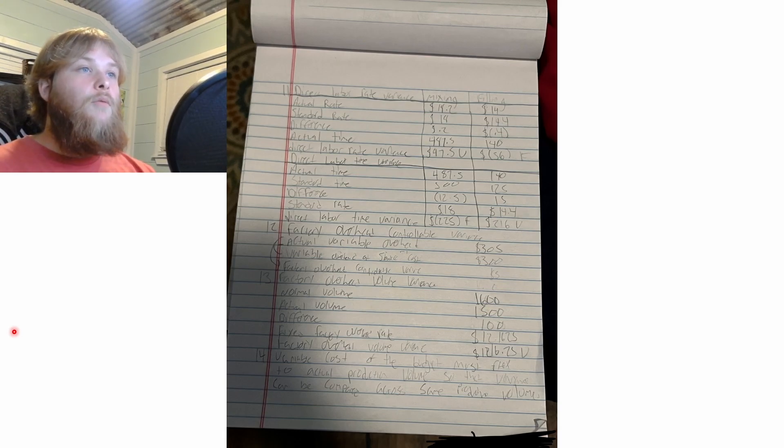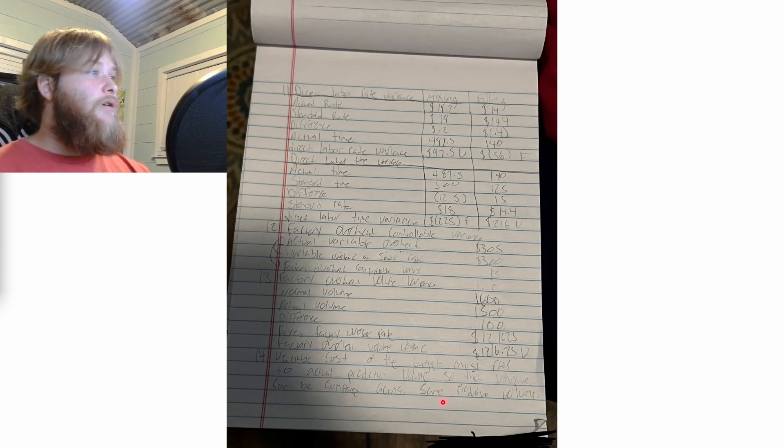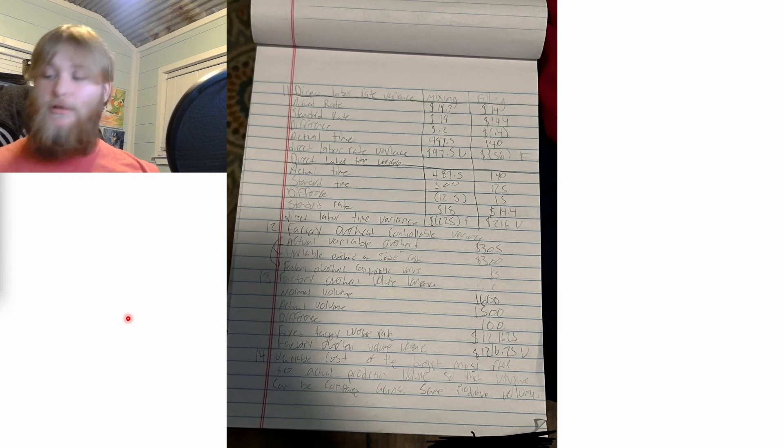For 14, it asked why the standard direct labor and direct material costs in parts 10 and 11 are based on the actual 1,500 case production volume rather than the planned 1,375 cases used in the budgets for parts six and seven. I said variable costs in the budget must flex to the actual production volume so the variance can be compared across the same production volumes. I hope that explained enough — I'm still trying to understand a lot of it myself, so I tried to explain it the best way I could.